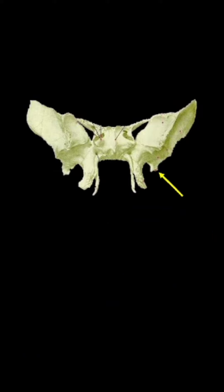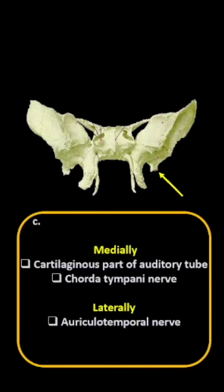What are the relations of the spine of sphenoid? Medially you have cartilaginous part of auditory tube and chorda tympani nerve. And laterally you have the auriculotemporal nerve.